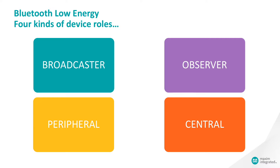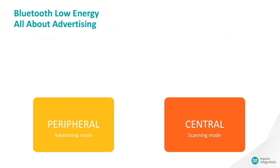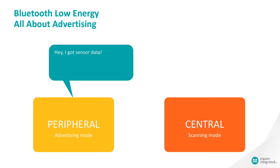For the rest of our discussion today, we're only going to be talking about peripherals and centrals. The peripheral starts in advertising mode, sending out advertisements over and over — kind of like broadcast television, just waiting to get in range of a central that needs its data. A peripheral may send advertisements as frequently as every 20 milliseconds or as infrequently as every 10 seconds, depending on the data needs and battery life requirements. It adds a few milliseconds at random for each transmission so that multiple peripherals don't get locked into a collision loop.